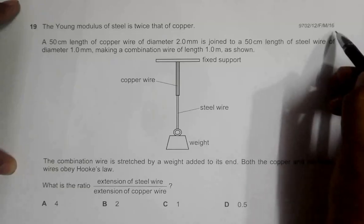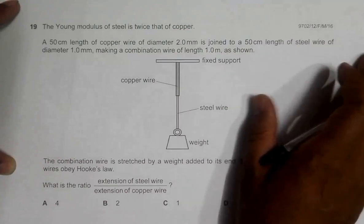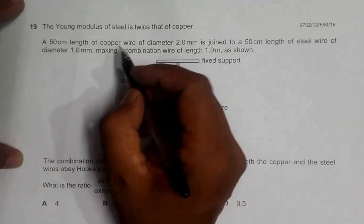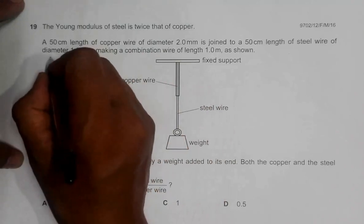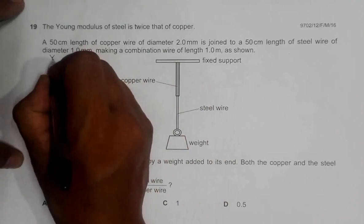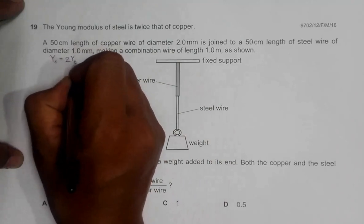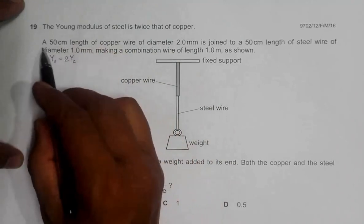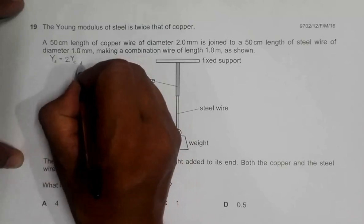Hello folks, this is 2016 February Mars paper 1 2, question number 19. It says that the Young's modulus of steel is twice that of copper, so Y of steel should be equal to twice Y of copper. A 50 centimeter length of copper wire...